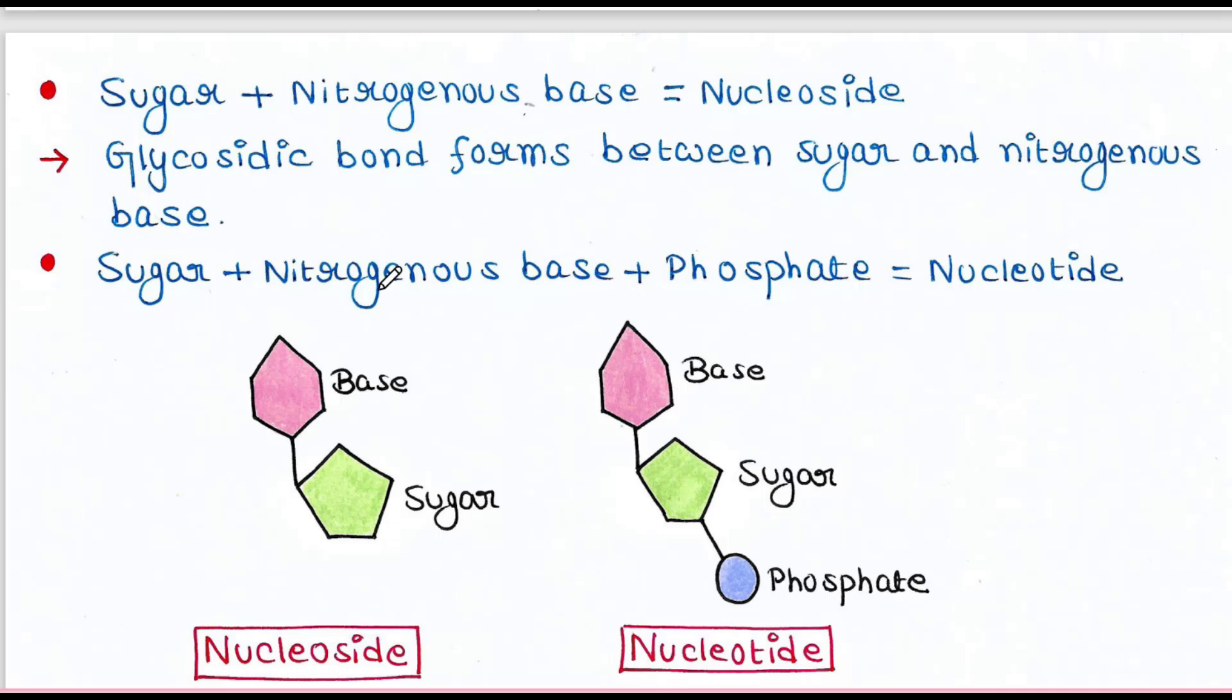Now we can call it a nucleoside when the sugar and nitrogenous base are attached, just like this. Here is the ribose or deoxyribose sugar, and here is the base—A, T, G, C, or U. In between this base and sugar, the bond is the glycosidic bond, and we can call it a nucleoside.